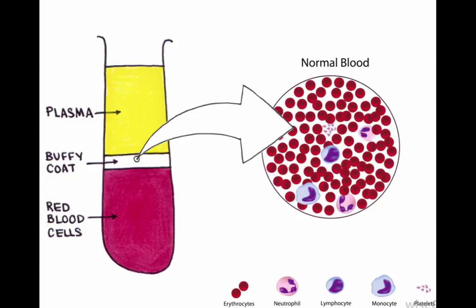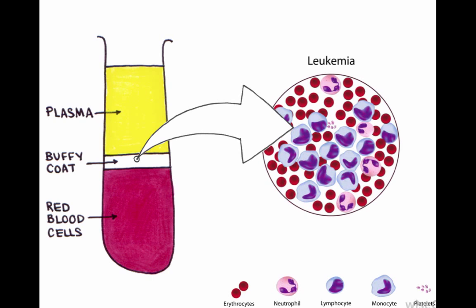Now let's compare this slide to a slide showing leukaemia. The number of leukocytes has increased, whilst the number of red blood cells have actually decreased. We'll look at why this happens and what the clinical consequences of this are in the pages to come.